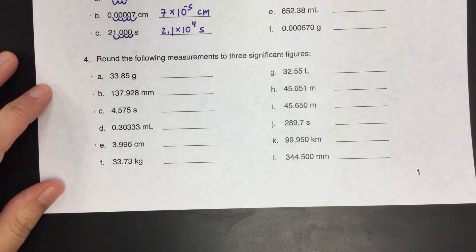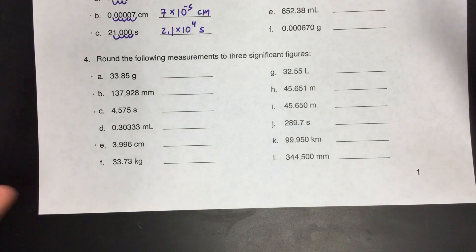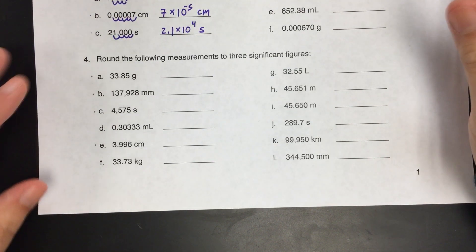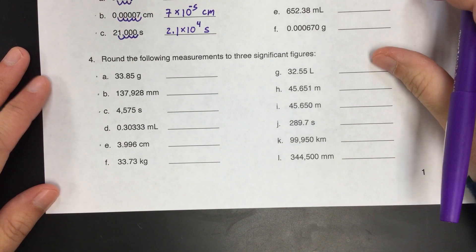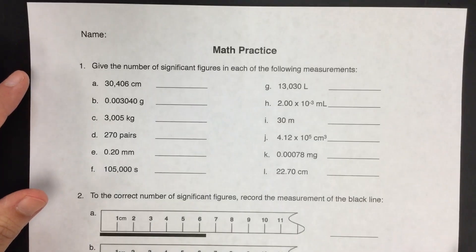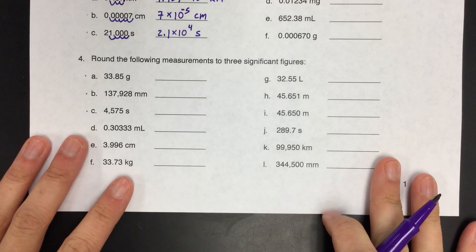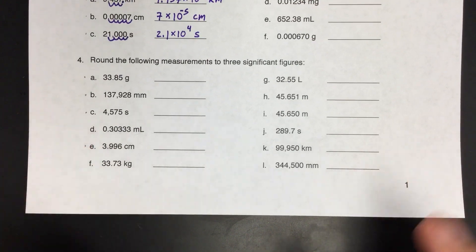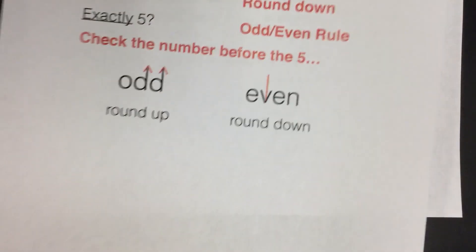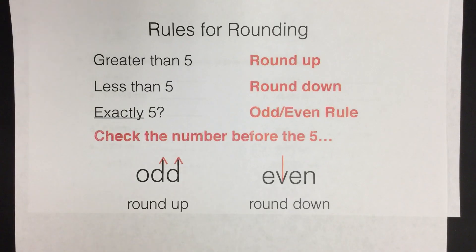This is a really important skill to have when you do calculations, but this video is just to round the numbers, not to actually do the calculation. So this is number four in your math practice packet. It's asking you to round these numbers to three significant figures. And in order to do that, we need to remember our rules for rounding, which you kind of already know, but there's one part that's a little bit different than the way you're used to rounding things.